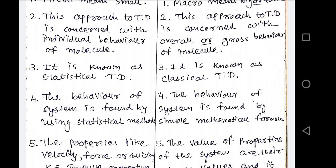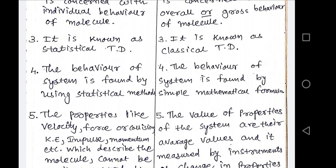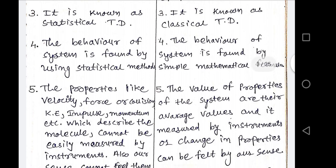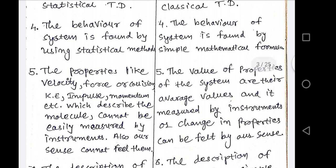From the microscopic point of view, the behavior of the system is found by using a statistical method. From the macroscopic point of view, the behavior of the system is found by simple mathematical formulas. Properties like velocity, force, collision, kinetic energy, impulse, and momentum, which describe the molecule, cannot be easily measured by any instrument and our senses cannot detect them either.